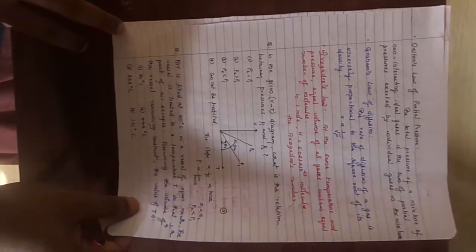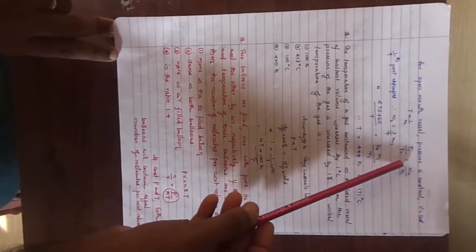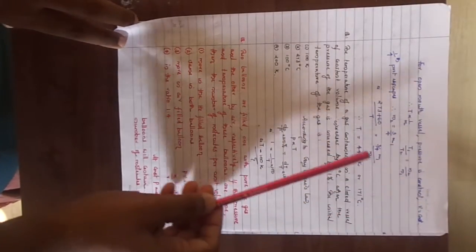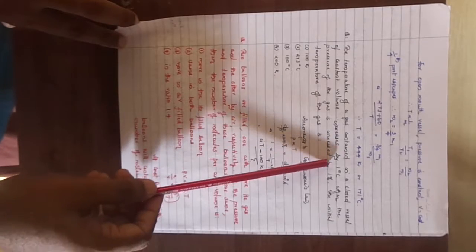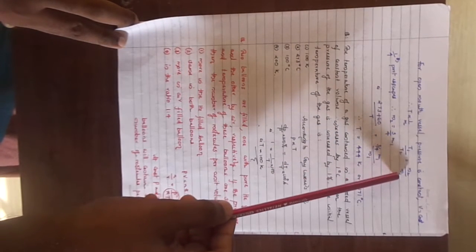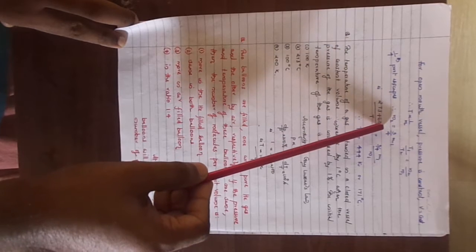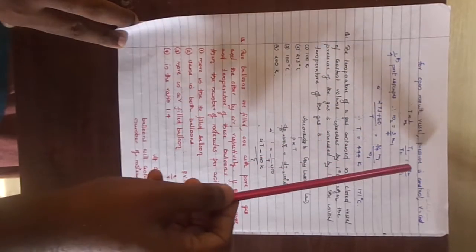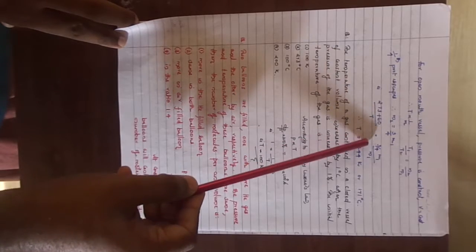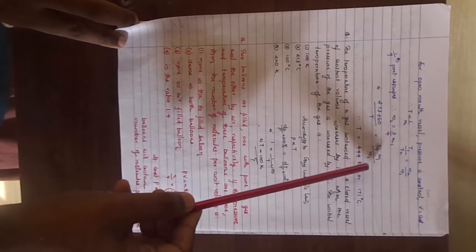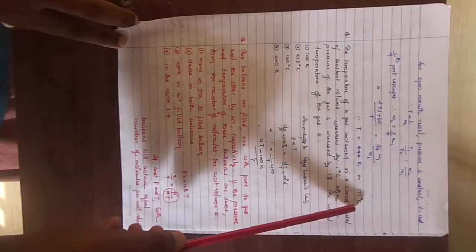We can use the simple concept here. So for open mouth vessel the pressure is constant, and also V is constant here. So we can say the temperature is proportional to the number of moles or the mass. So for the two situations we can write as T1 by T2 equal to M2 by M1. Here the 1 by 4th of the part escapes so the second mass becomes 3 by 4 M1. So we have to use Kelvin scale. So 273 plus 60 by T is equal to M2 as 3 by 4 M1 by M1. You get the answer in Kelvin 444. We can convert it by subtracting 273, so we get the answer 171 degrees Celsius.